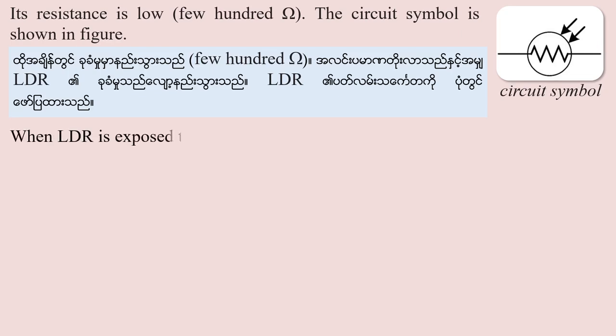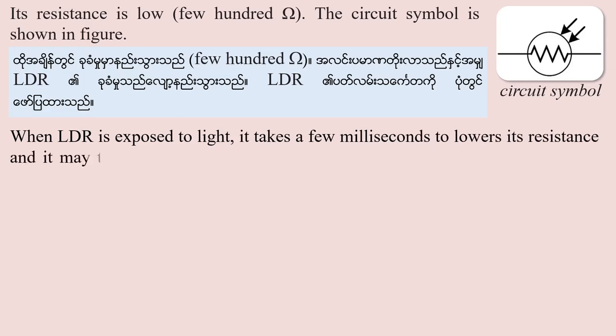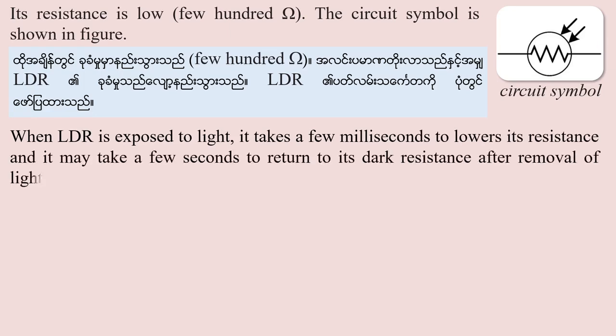When an area is exposed to light, it takes a few milliseconds to lower its resistance, and it may take a few seconds to return to its dark resistance after removal of light.